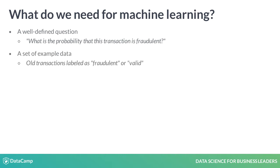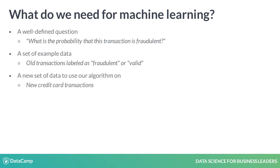Next, we need some data to analyze. We had months of old credit card transactions and associated metadata that had already been identified as either fraudulent or valid. Finally, we need additional data every time we want to make a new prediction. We needed to have the same type of information on every new purchase so that we could label it as fraudulent or valid.